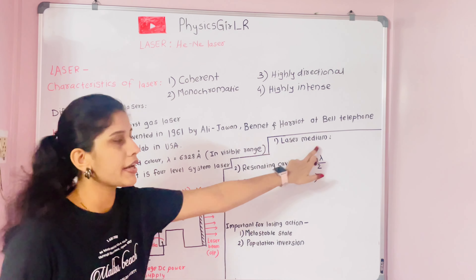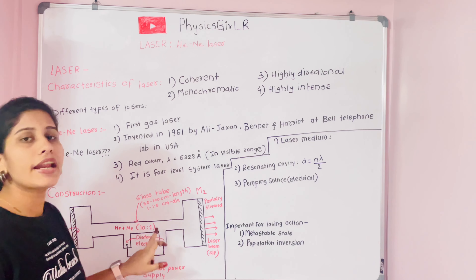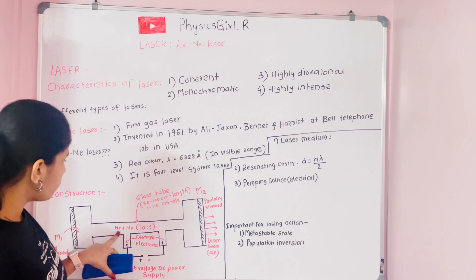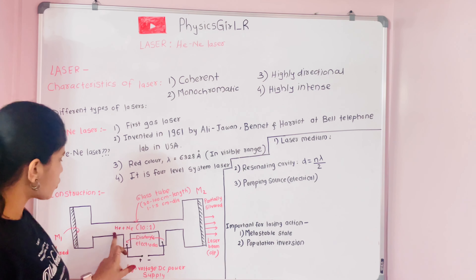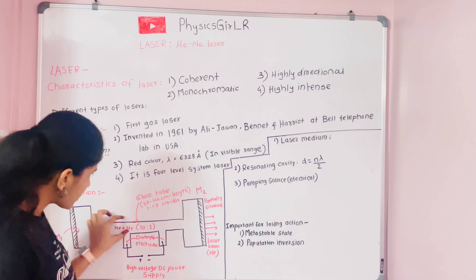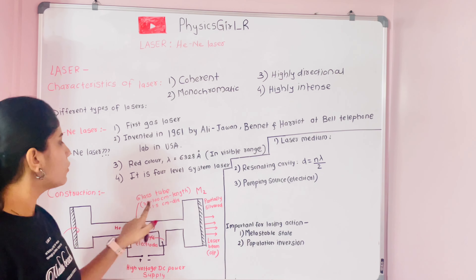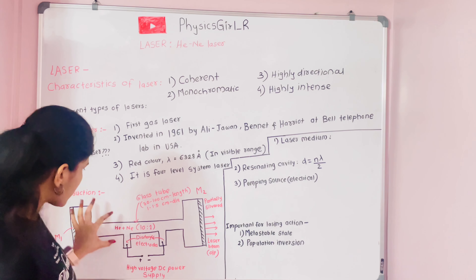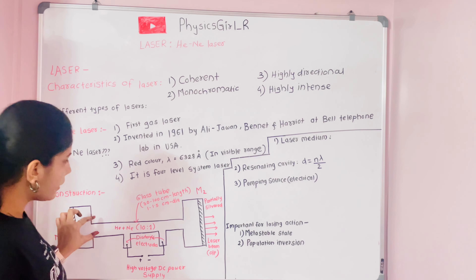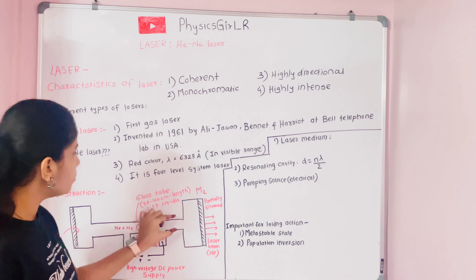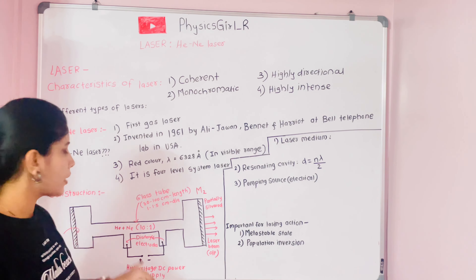The laser medium is a glass tube filled with a mixture of helium and neon in a 10:1 ratio — meaning 10 helium atoms for every 1 neon atom. The tube has a diameter of 1 to 1.5 cm and a length of about 30 to 100 cm. It is narrow and long, filled with the gaseous helium-neon mixture.